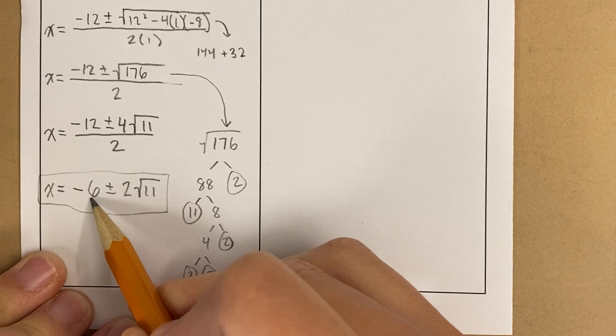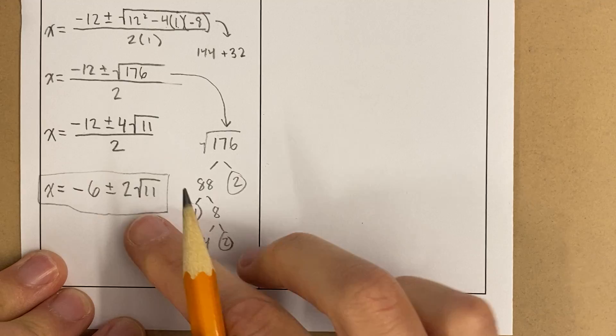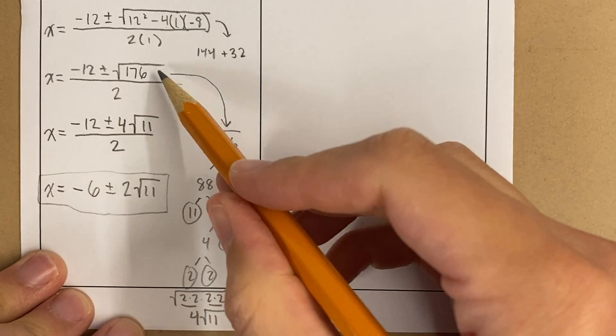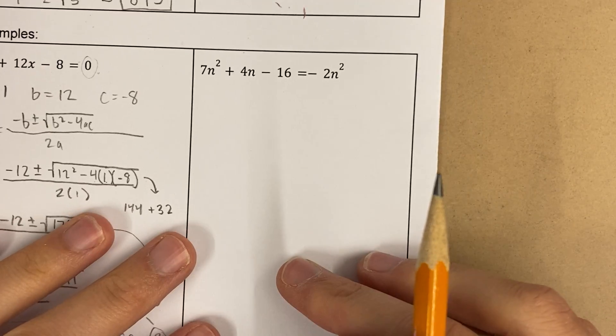And remember, again, this is two answers. This is negative 6 plus 2 root 11 and negative 6 minus 2 root 11. Okay, so notice that simplifying this radical allowed me to simplify the answer a little bit more.